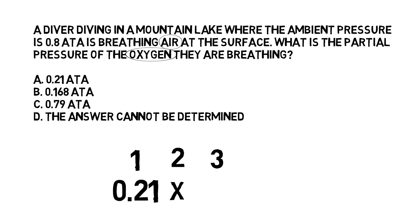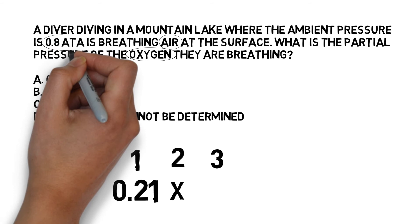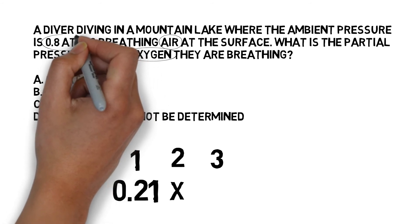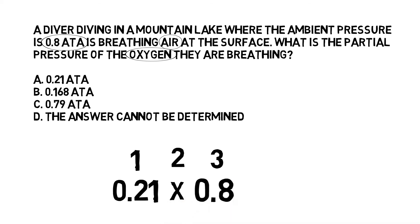In step three we normally look for the depth in the question and then calculate what the pressure at that depth is and write it down. On this occasion we haven't been given a depth. They're diving in a mountain lake and they're at the surface, but they tell us what the pressure is — it's 0.8 atmospheres. So rather than converting a depth into a pressure, we just take the pressure that's already been given to us and enter that in as step three.